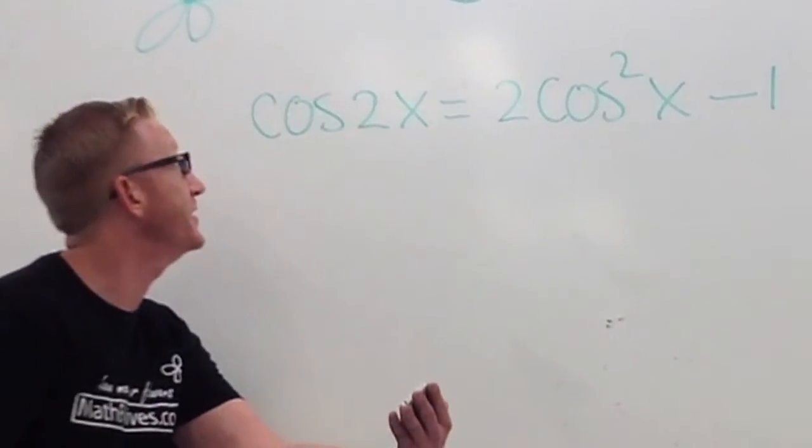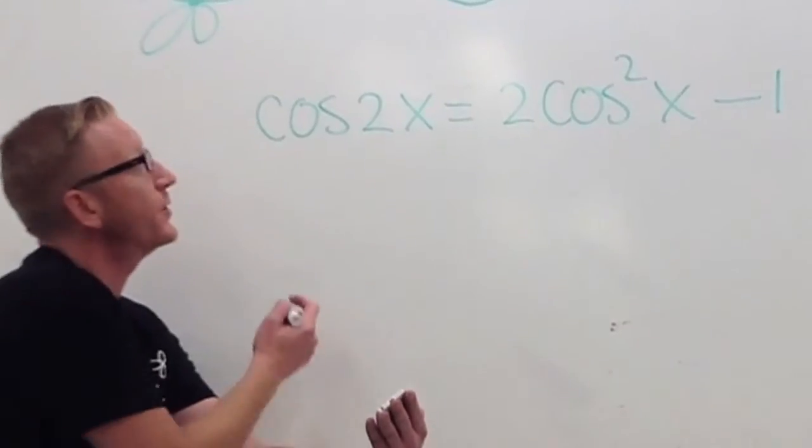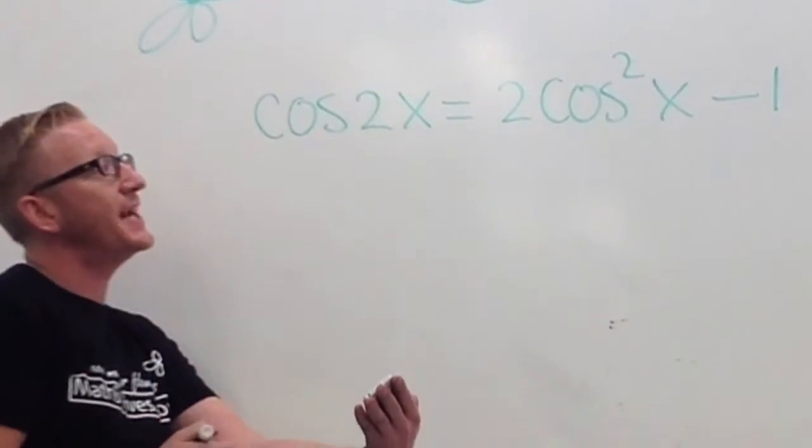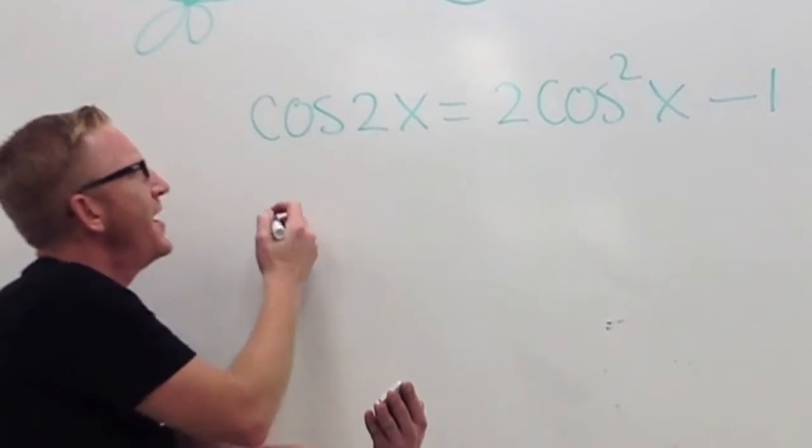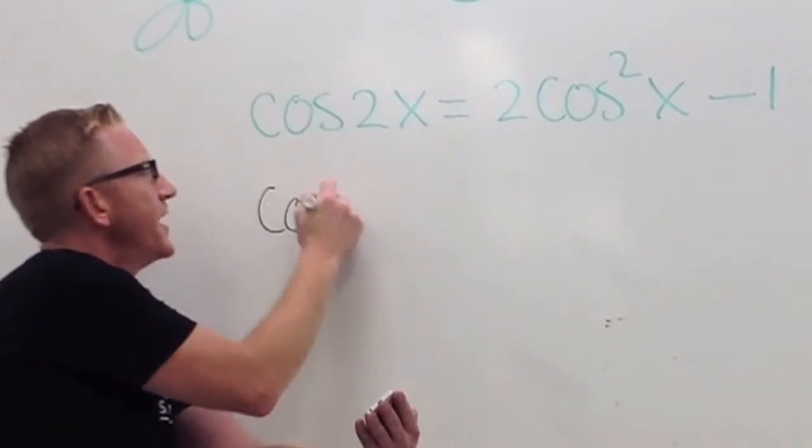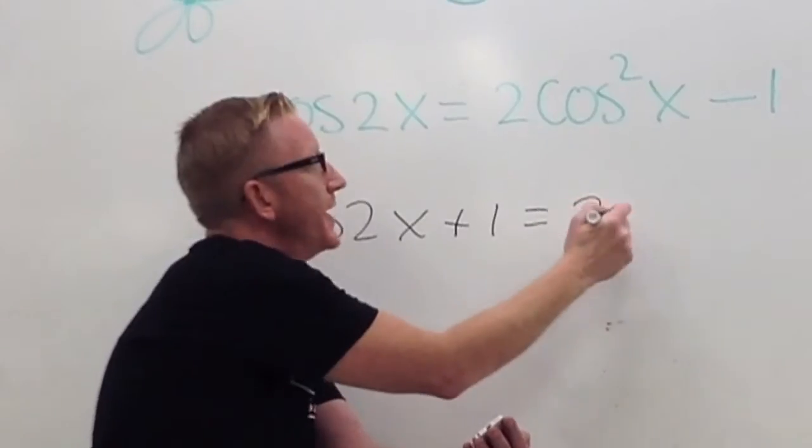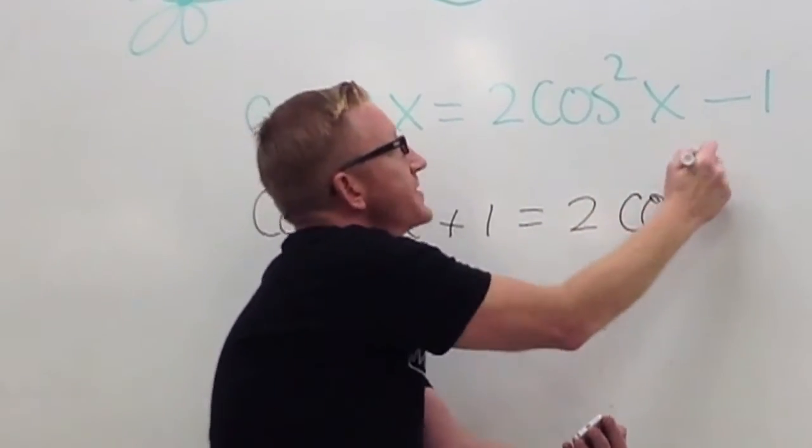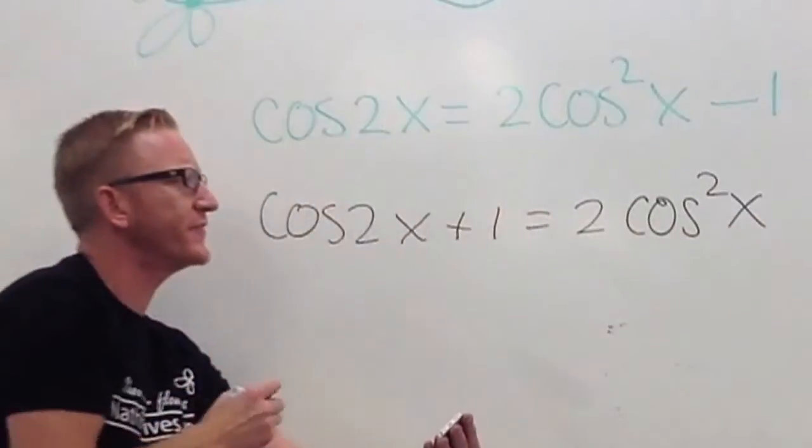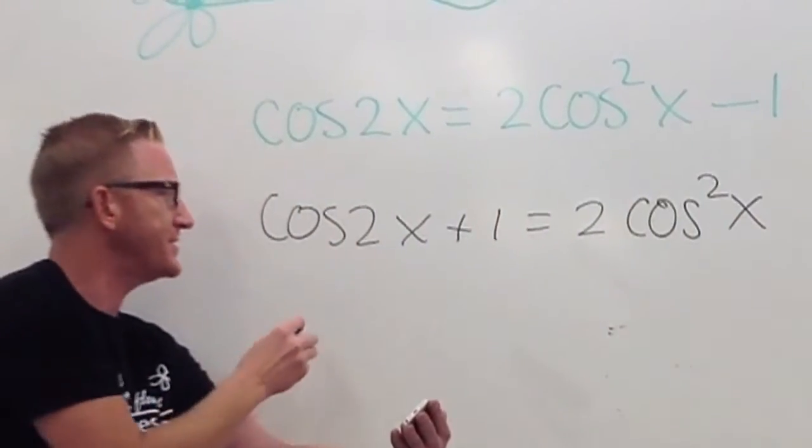So here we go. We're going to solve that dang thing for the cosine. So I'm going to have the cosine 2x plus 1 is equal to 2 times the cosine squared x. And then, still solving for the cosine, I'm going to divide it by 2.